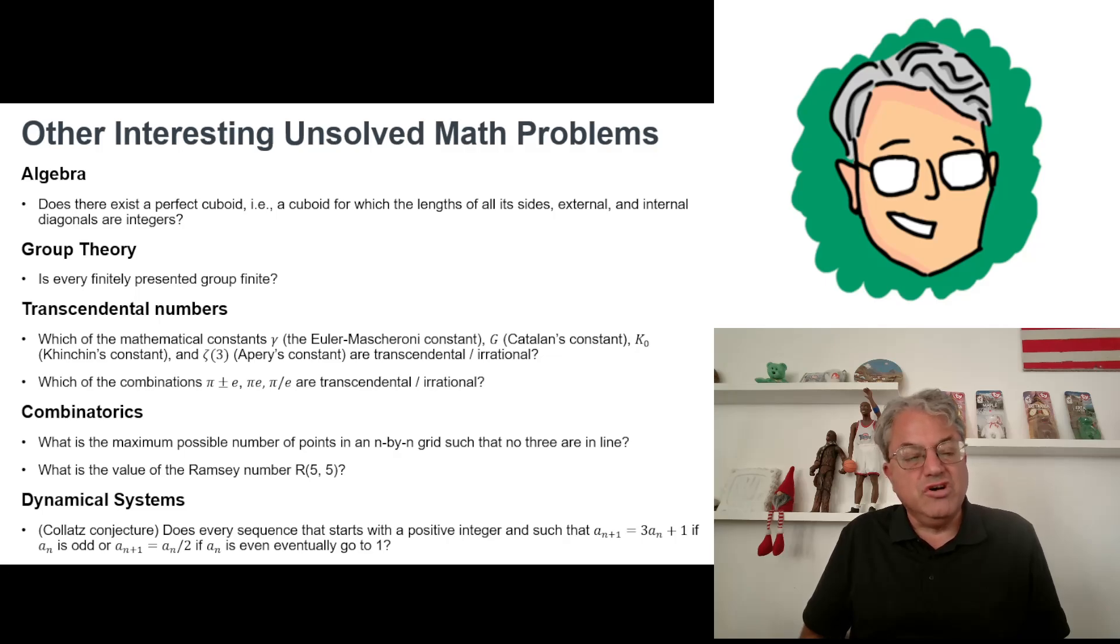Combinatorics. There's a problem called the no-three-in-line problem. If you have an n-by-n grid, what's the minimum number of points you can put on the grid that guarantees that there's no three that are all in line? That's not known in general. And there's a problem in Ramsey theory. What's the value of the Ramsey number R(5,5)? You want to know what's the minimum number of people you have to have at a party, such that for every five people in the party, there exist five people that are either mutual strangers or mutual friends. That's not known either. We have bounds for that number, but we don't know the exact value.